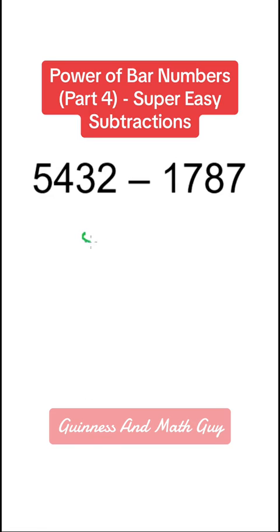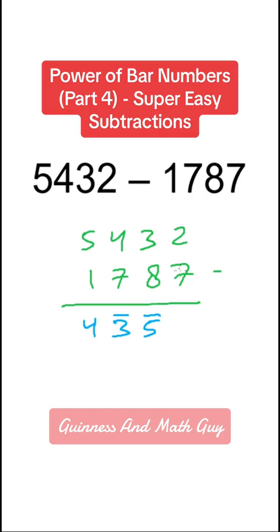So we can write 5432 minus 1787. 5 minus 1 is 4, 4 minus 7 is bar 3, 3 minus 8 is bar 5 and 2 minus 7 is bar 5.